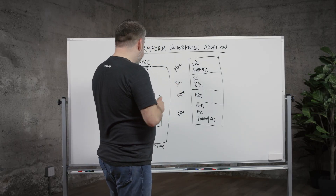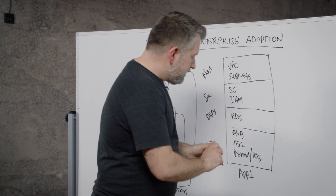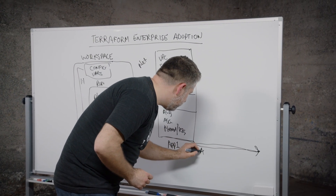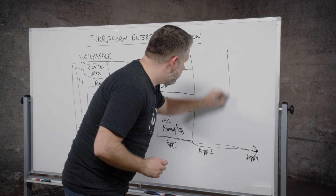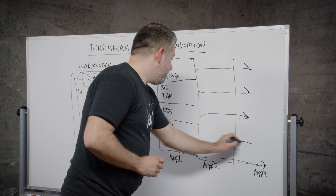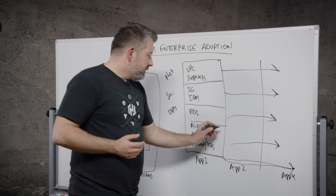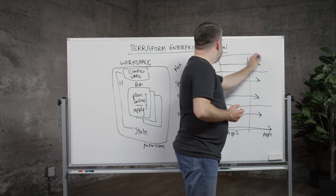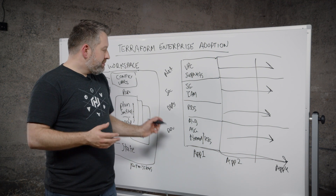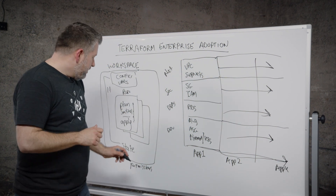If this defines the stack for app one, more likely than not other applications will use the same structure. We can think of this in a graph format — app two, app x, and so on — applying the same pattern to each. At the intersection of each app and each role, that's a workspace. Each workspace has its own set of variables specific to that application. As you add additional applications, they'll use the same structure, and the intersection of each app and each role essentially becomes a workspace.